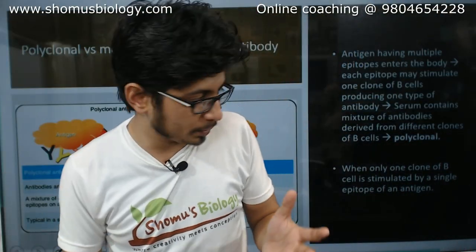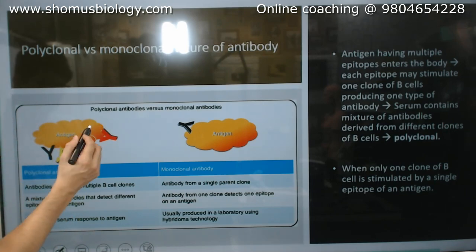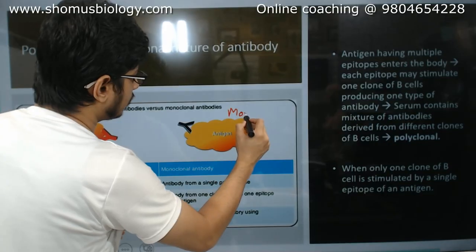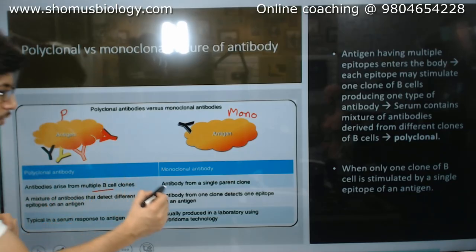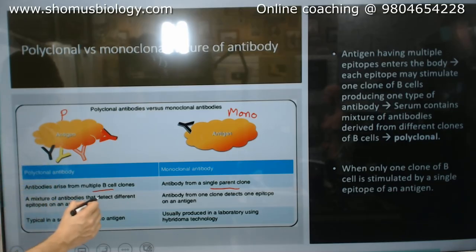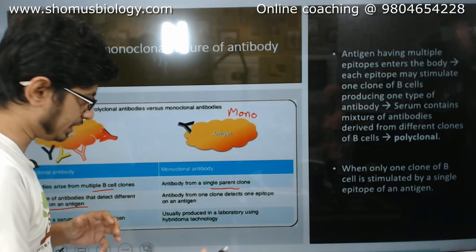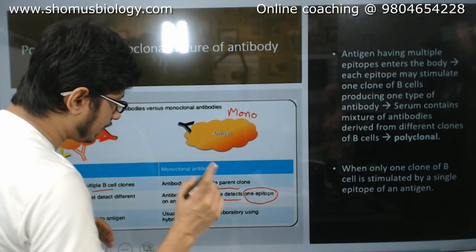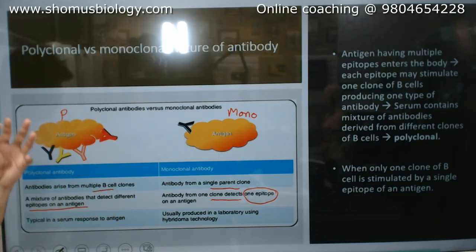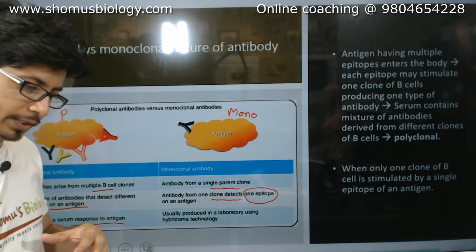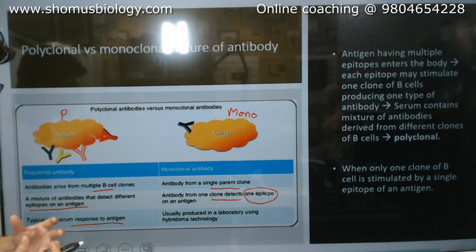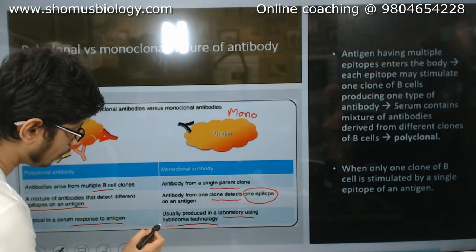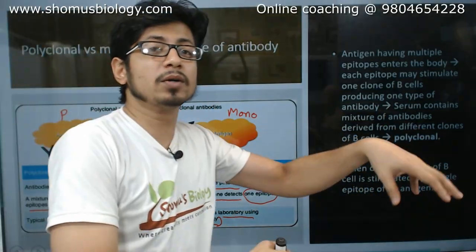Now let's look at the differences between polyclonal and monoclonal antibodies. On the left-hand side is polyclonal antibody; on the right-hand side is monoclonal antibody. Polyclonal antibodies arise from multiple B cells, while monoclonal arise from a single parent cell. A polyclonal mixture of antibodies can detect different epitopes and bind with different epitopes of an antigen, but a monoclonal antibody can detect only one single epitope. In our body, antibodies generated in response to an antigen are polyclonal, but monoclonal antibodies need to be produced specifically in the laboratory using hybridoma technology.